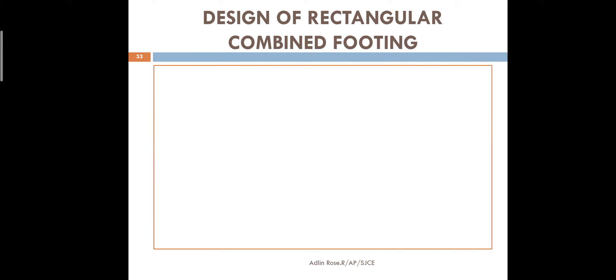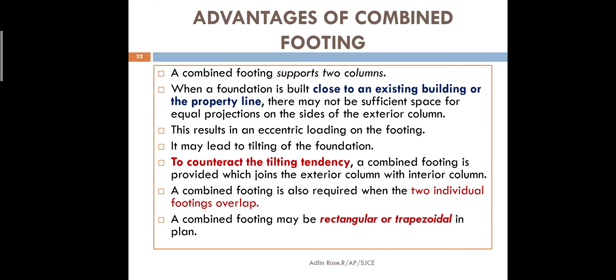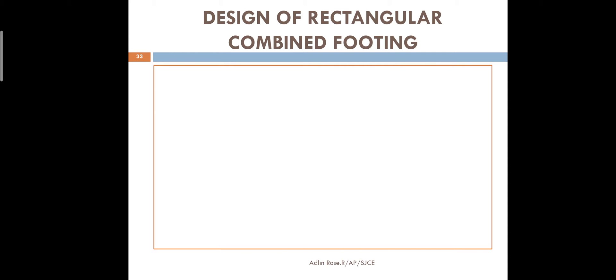A combined footing can be rectangular or trapezoidal. In this unit, we will cover proportioning of rectangular combined footing, trapezoidal combined footing, and strap footing. For both combined footing types - rectangular and trapezoidal - we will solve two types of problems each, and similarly for strap footing as well.